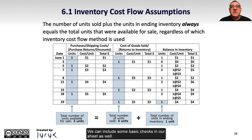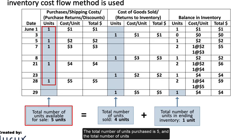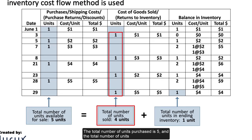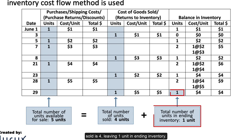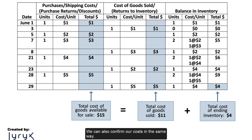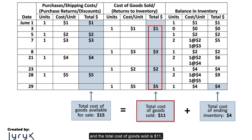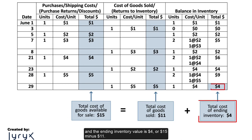We can include basic checks: the number of units sold plus the units in ending inventory always equals the total number of units available for sale, regardless of which inventory cost flow method is used. The total number of units purchased is 5, the total number of units sold is 4, leaving one unit in ending inventory. The total cost of units purchased is $15, the total cost of goods sold is $11, and the ending inventory value is $4, or $15 minus $11.